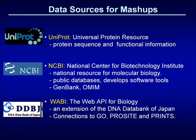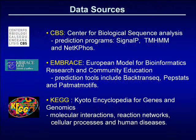A number of data sources are accessed by mashups to allow protein analysis to be performed. These data sources include UniProt, NCBI and the Web API for Biology, which provide access to various protein related databases. Other data sources include CBS and Embrace, which offer protein prediction programs as web services. The KEGG data source provides information about protein pathways and interactions.